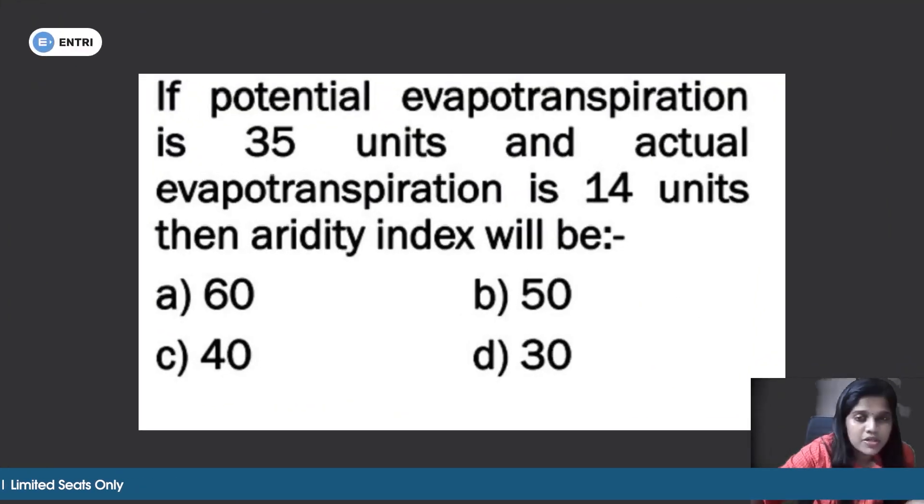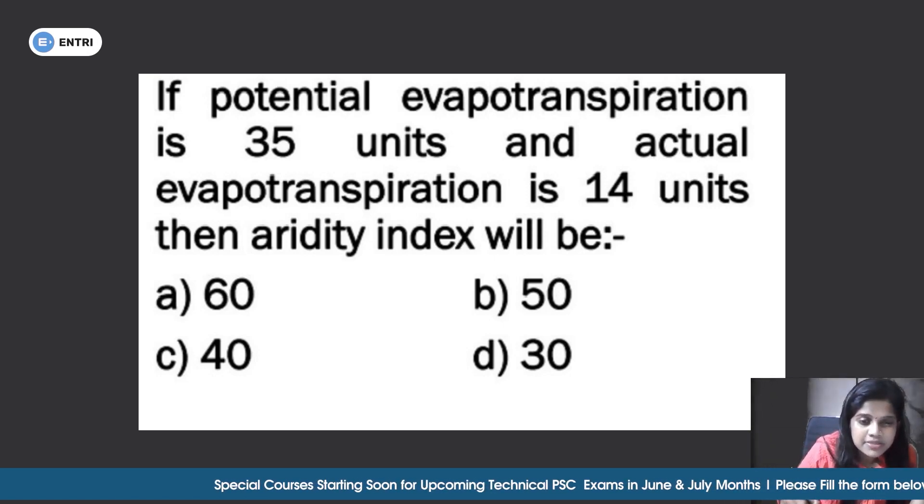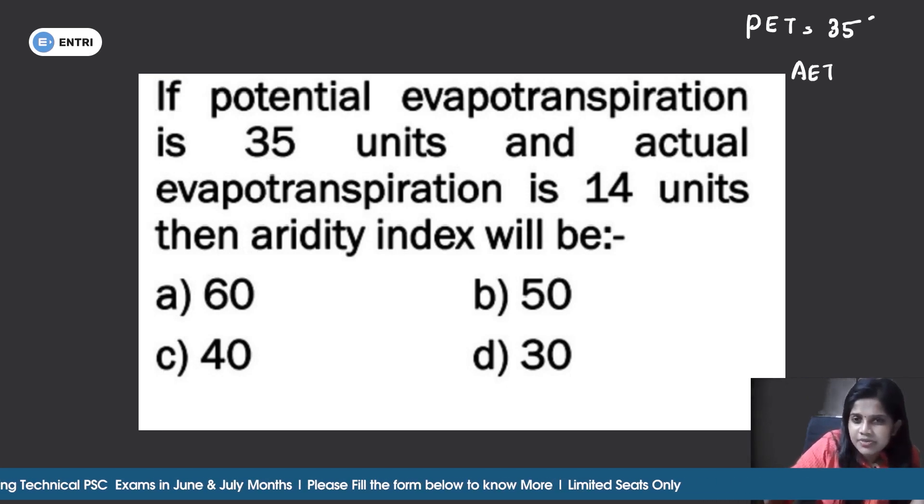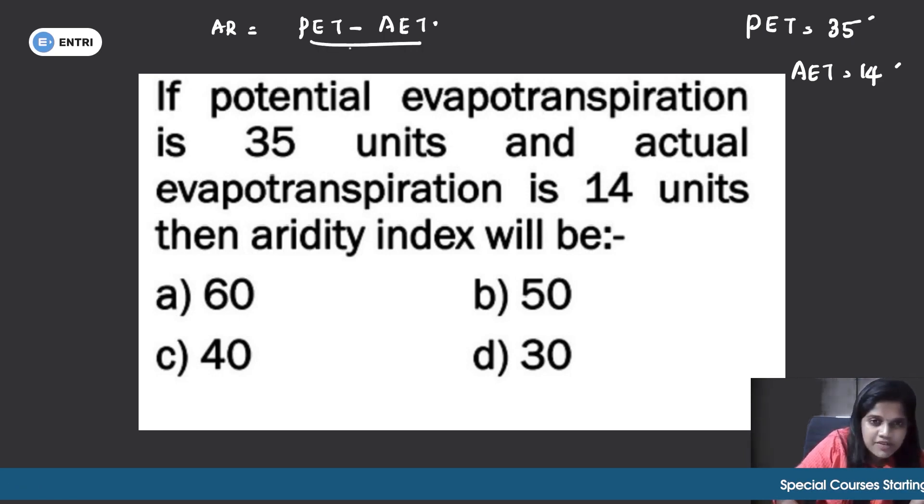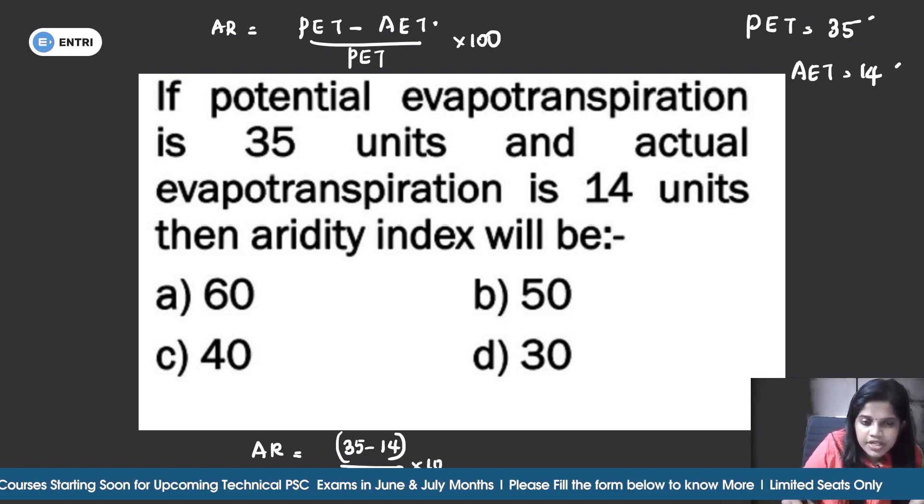If potential evapotranspiration is 35 units and actual evapotranspiration is 14 units, then aridity index will be. You have to calculate the aridity index. Aridity index AR is equal to (PET minus AET) divided by PET into 100. So AR is equal to (35 minus 14) divided by 35 into 100. It is our relationship.